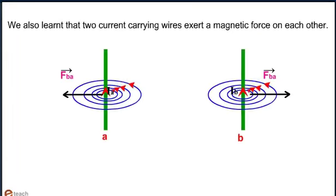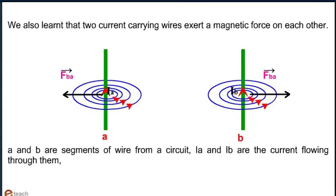We also learned that two current carrying wires exert a magnetic force on each other. A and B are segments of wire from a circuit. Ia and Ib are the current flowing through them.